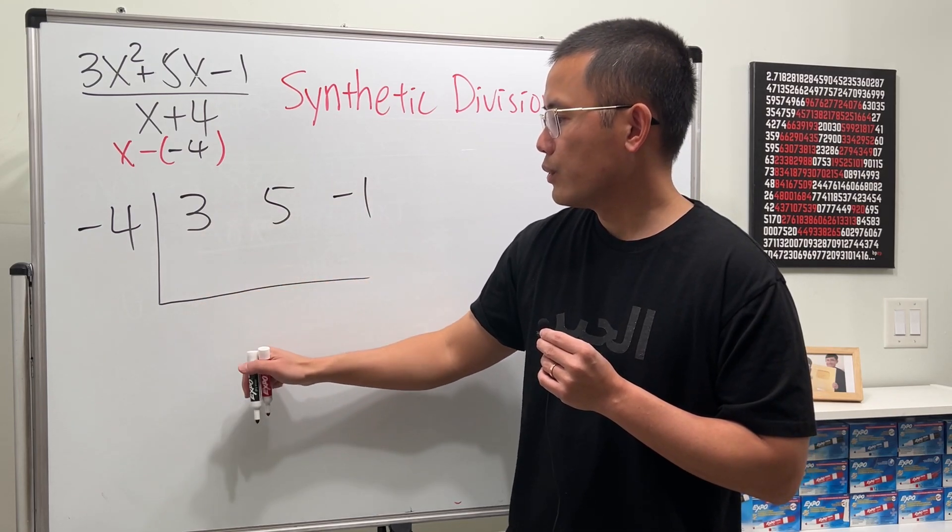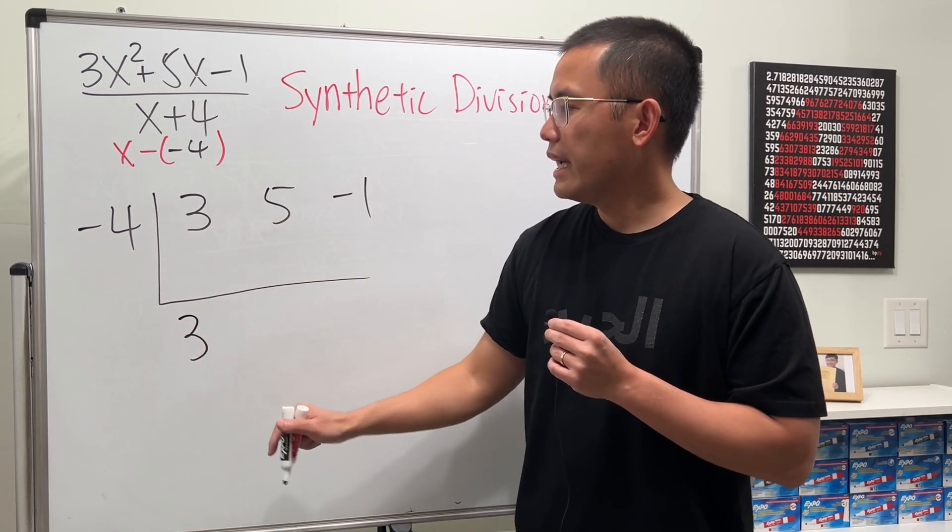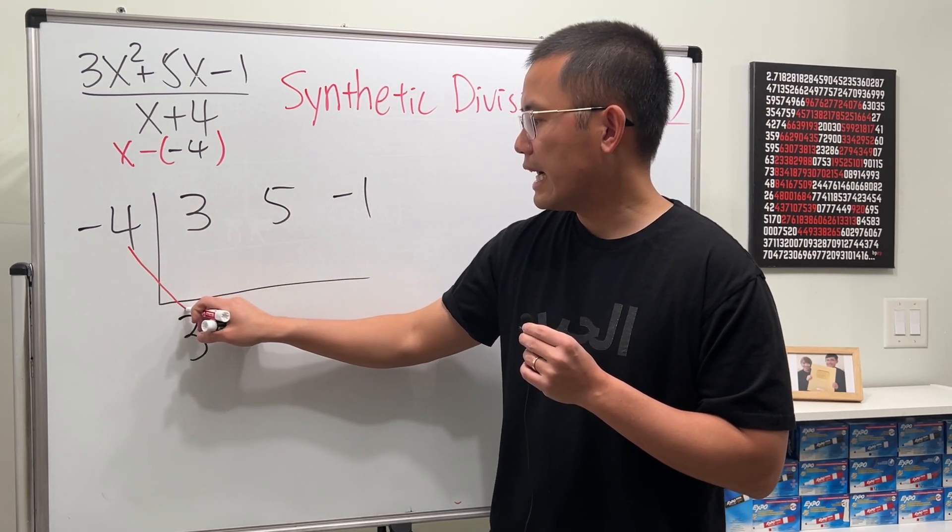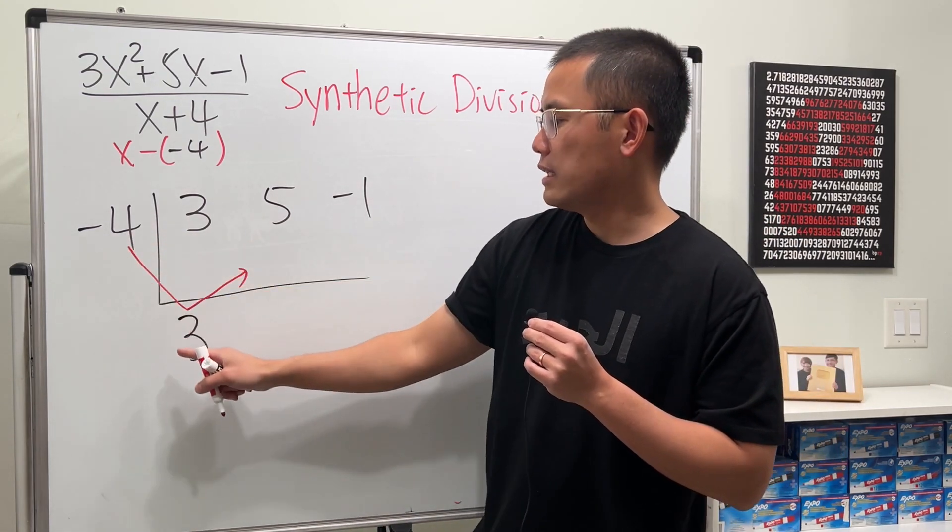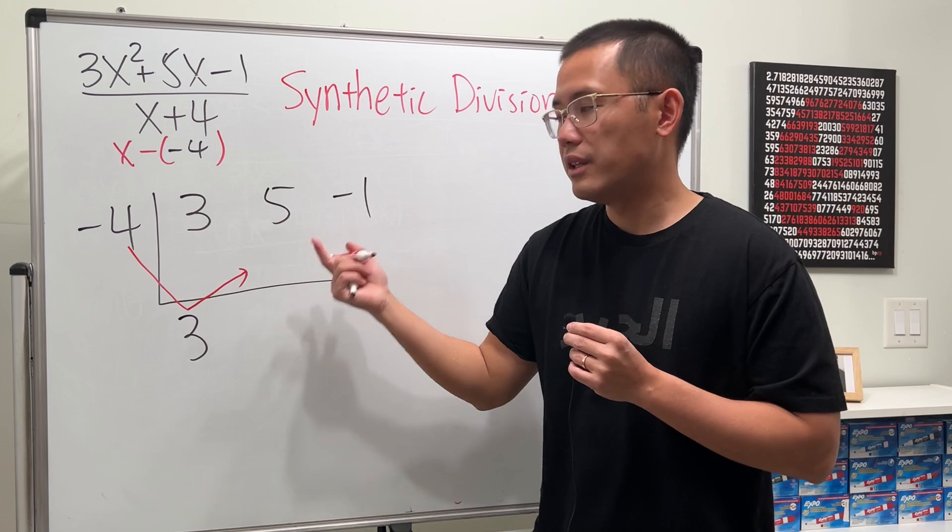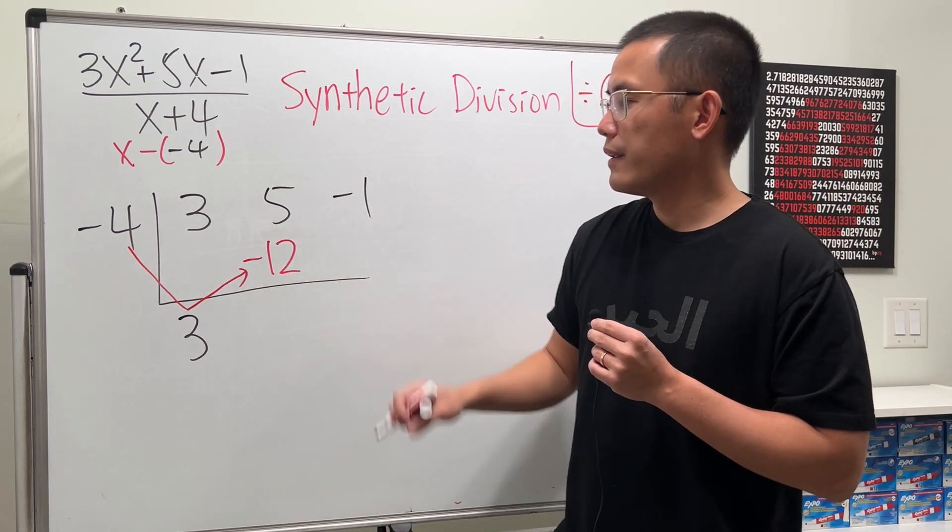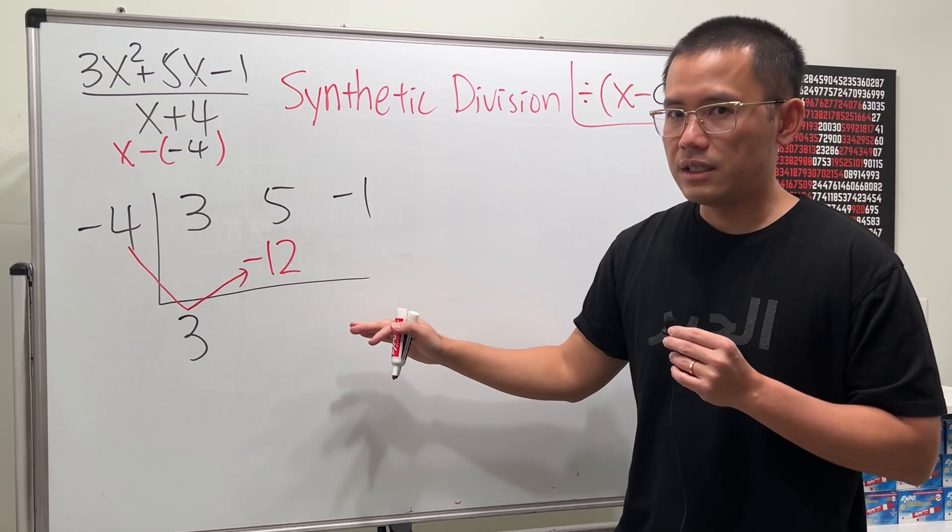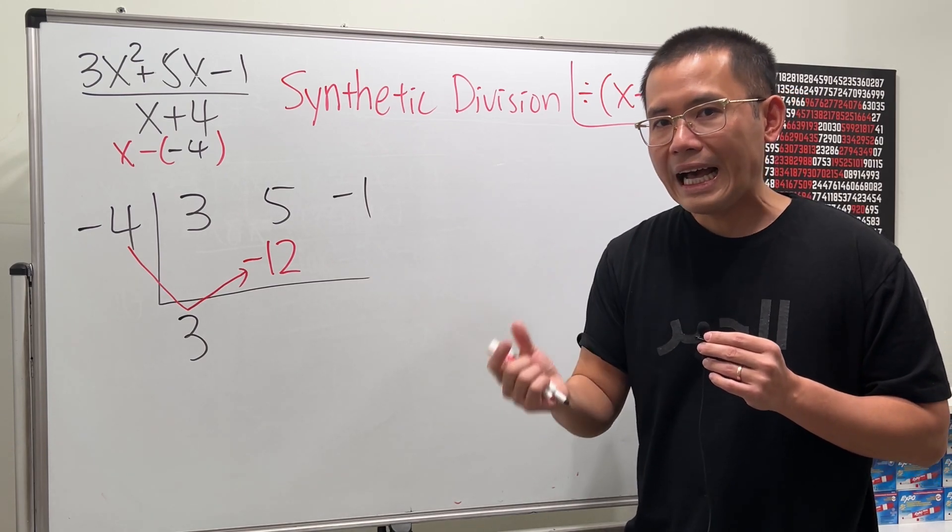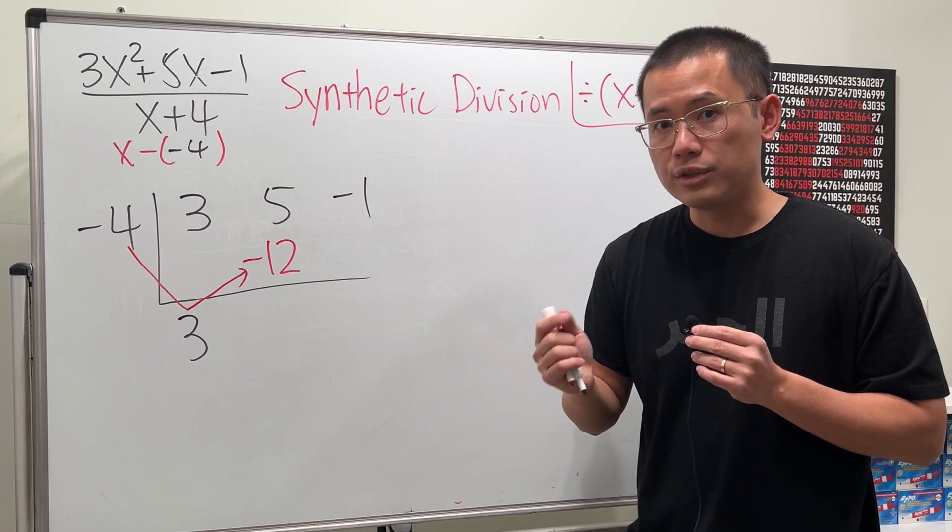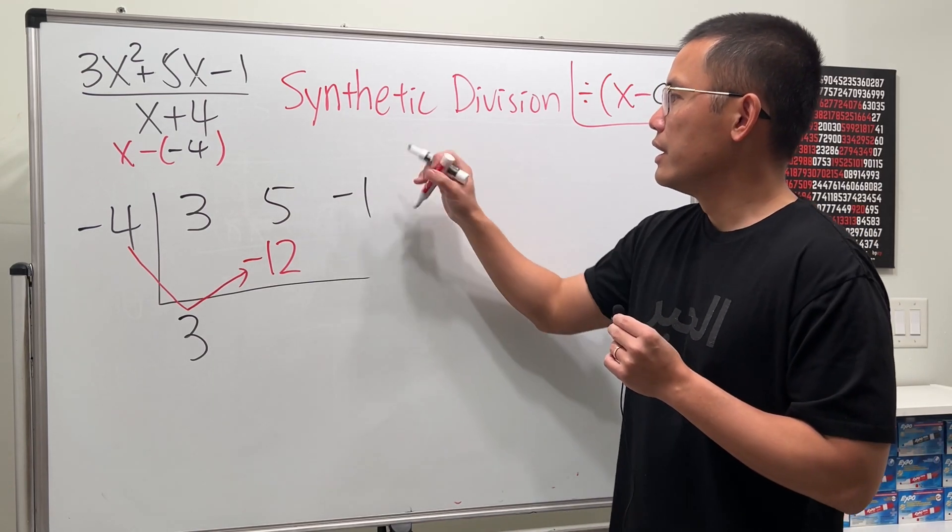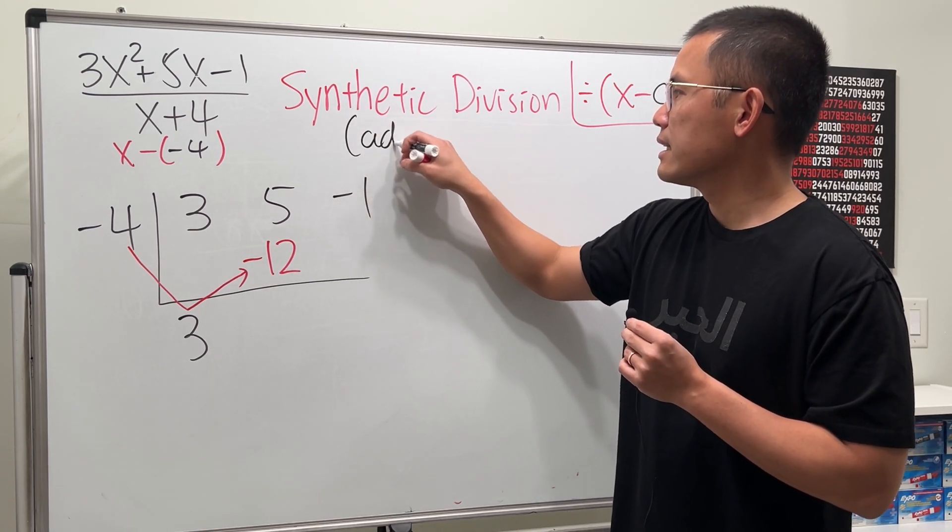You first bring this down. We have 3. And then you are going to take this, times that, and then you put down the result here. So negative 4 times 3 is negative 12. And the key right here is when you do synthetic division, you are going to add the numbers instead of subtract. For long division, you subtract. But for synthetic division, the key right here is add.